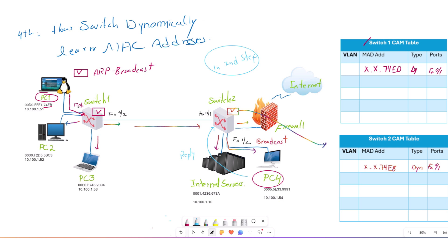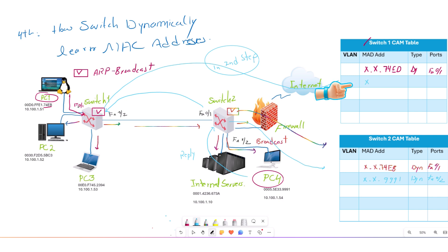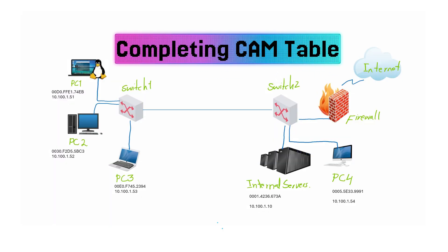After PC4 receives and replies to the ARP message, Switch 2 stores PC4's MAC address and forwards the reply to Switch 1. Switch 1 then also stores PC4's MAC address in its CAM table. This same process happens for all devices until the switch completes its CAM table, after which the connected nodes communicate directly.